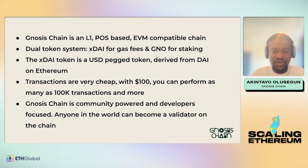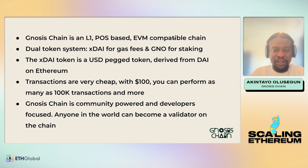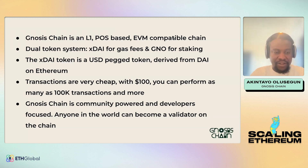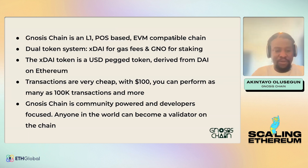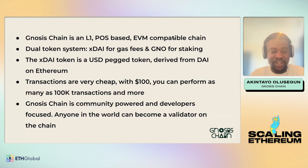Because xDai is stable and pegged to the dollar, transactions are very, very cheap on this chain. You could do as many as 100k transactions or even more depending on the type you're doing. The dual token system also allows staking to be done very easily. Gnosis Chain is community and developer focused, and anyone in the world can become a part of it — it's pretty easy to do.